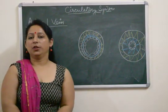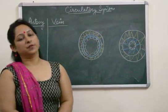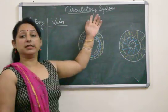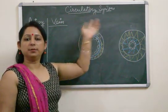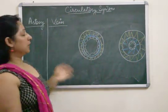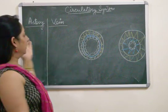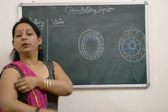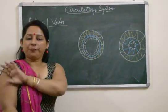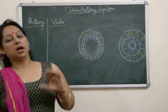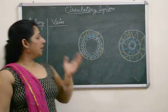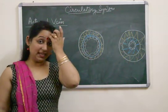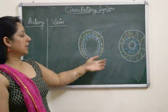Hello everyone. This topic which we are going to discuss today is covered in the circulatory system. It includes the various blood vessels — the artery, vein, and capillaries. I'll be discussing arteries and veins parallely, which makes the topic much more easy, and we'll also discuss the structural differences.